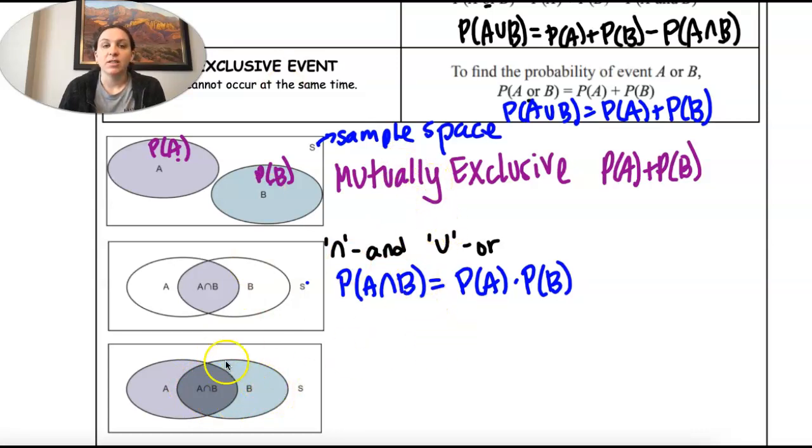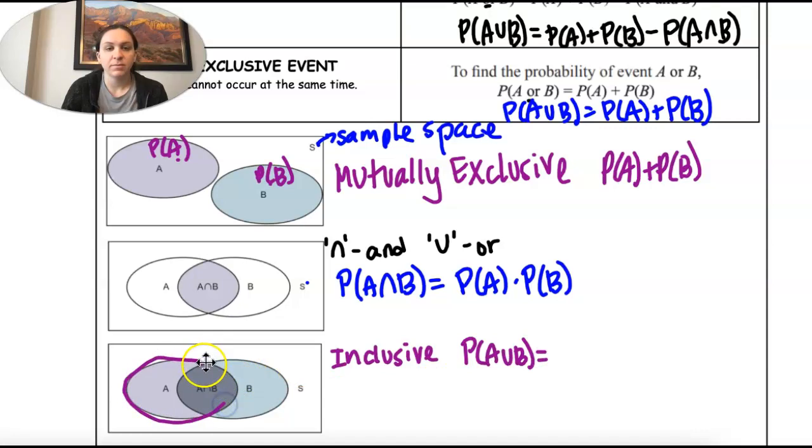So this is when we have inclusive. So we take the probability of A or B. That's this whole thing. It could be A or it could be B.